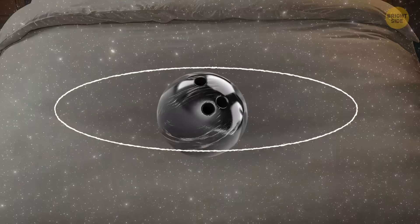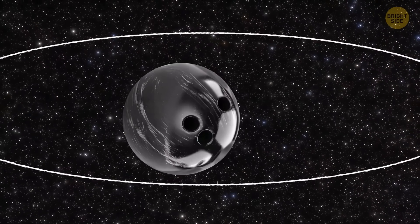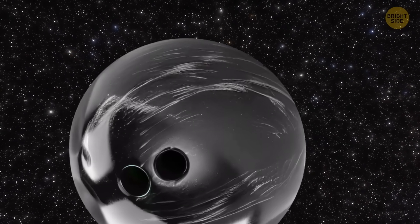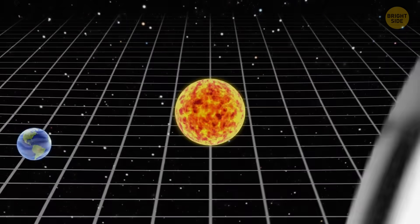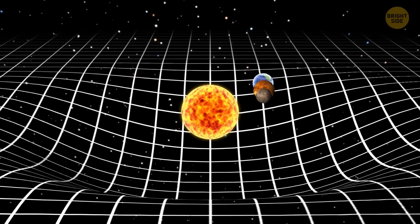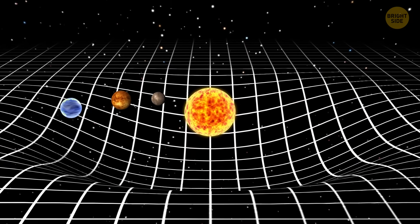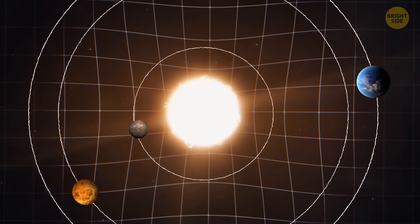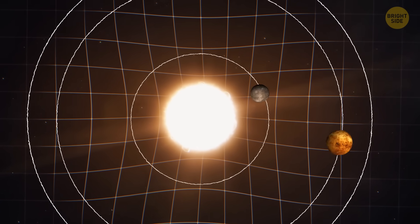But instead of bedsheets, we're talking about the fabric of space and time itself, or space-time for short. Heavy objects like planets and stars make dents in space-time, and moons, planets, or even light move along these dents. Gravity is the curve that tells them where to go.